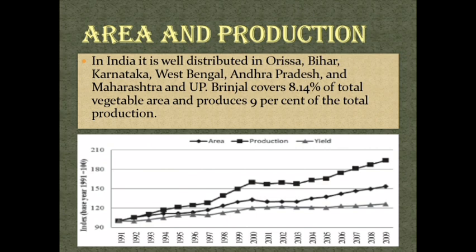Area and production. In India it is well distributed in Orissa, Bihar, Karnataka, West Bengal, Andhra Pradesh, Maharashtra, and UP. Brinjal covers 8.14% of total vegetable area and produces 9% of the total production.